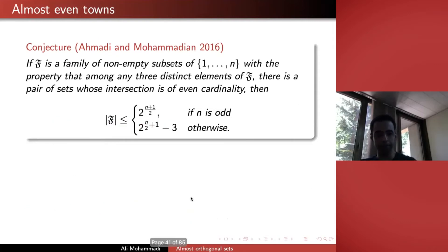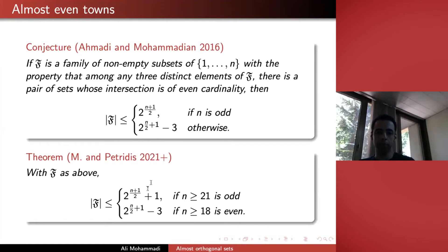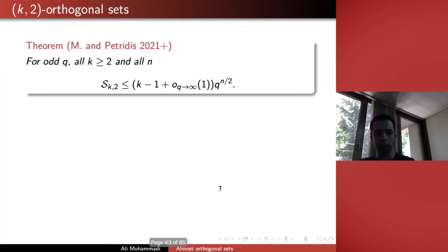In line with the even town problem, they made a conjecture for characteristic 2: if F is a family of non-empty subsets of {1,...,N} with the property that among any 3 sets in F, there is a pair whose intersection is even, then |F| satisfies a certain bound. We proved this — for even N we matched it exactly, for odd N we proved it's larger by 1. The proof that Ahmadi and Mohammadian gave — which had a hole — was fixable, and we actually showed that the same idea gives a proof for the whole conjecture. This was an inductive proof based on that argument.